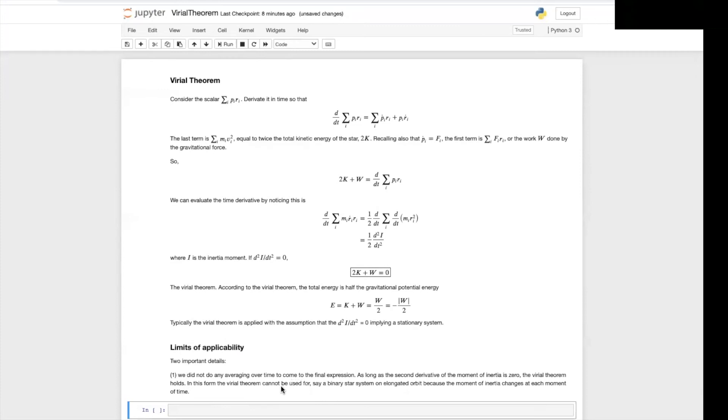And in this form, the Virial theorem cannot be used for a binary star system on an elongated orbit because the moment of inertia changes at each moment in time. Second point is the kinetic and potential energies are total energies of all particles in the system. That's a summation.